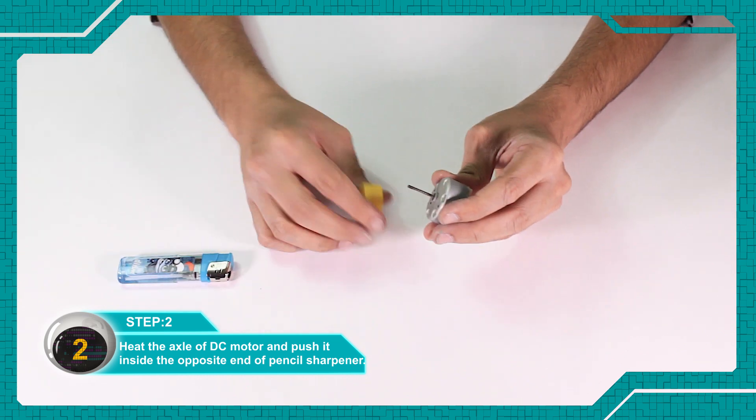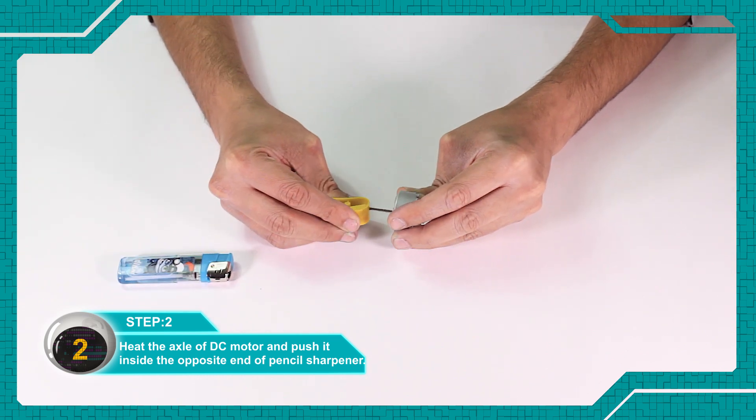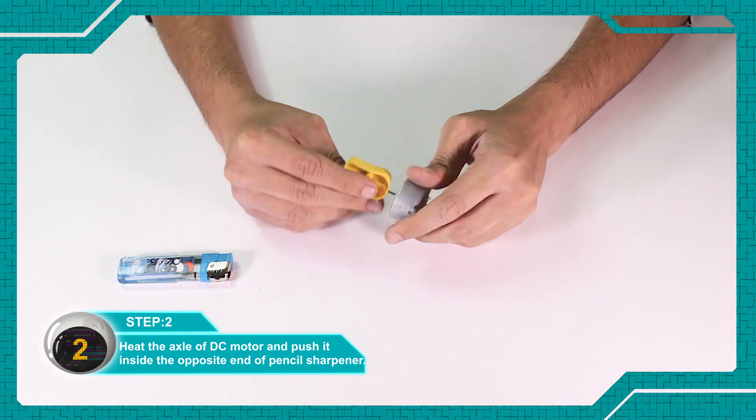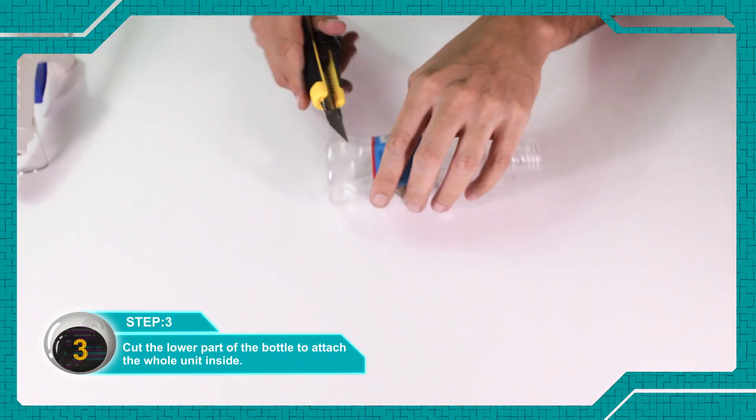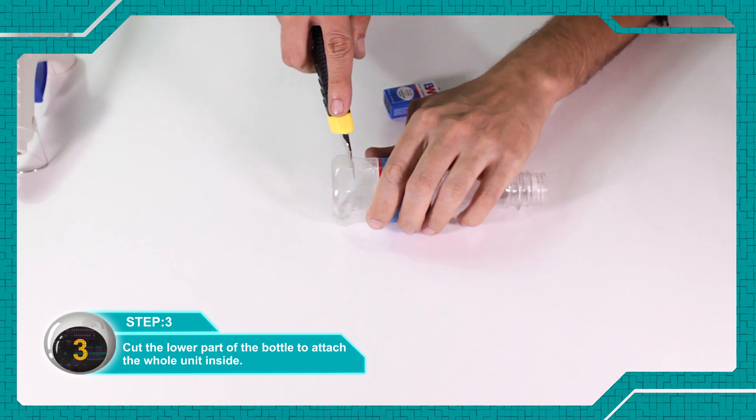Heat the wire of the DC motor and push it inside the opposite end of the pencil sharpener. Cut the lower part of the bottle.